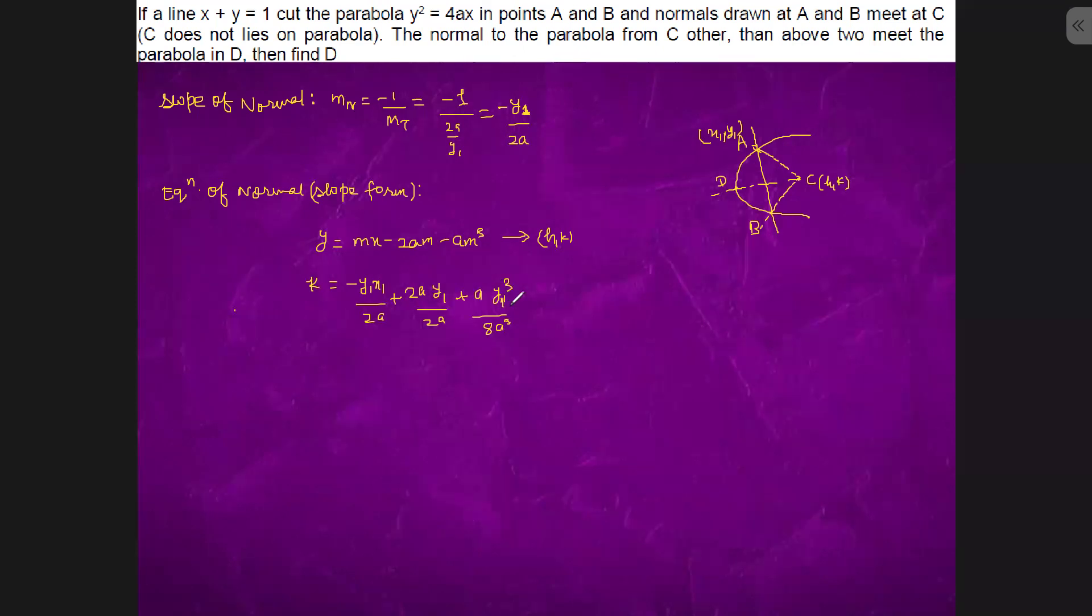So this is simply, this is a cubic. This is a cubic in y where sum of the roots are y1, y2, y3. We can see here the roots are y1, y2, y3. So we can see that y1 plus y2 plus y3 is equal to 0.